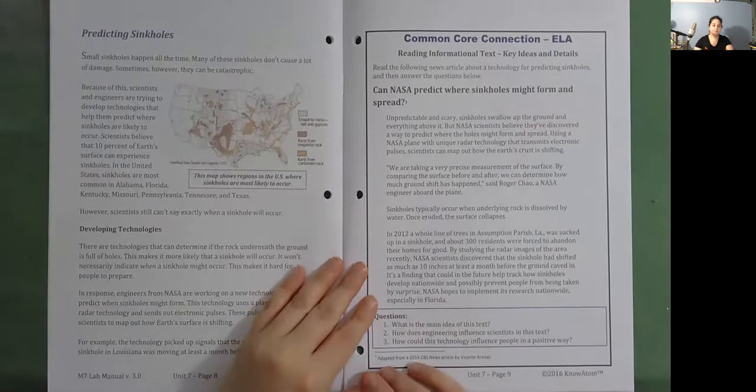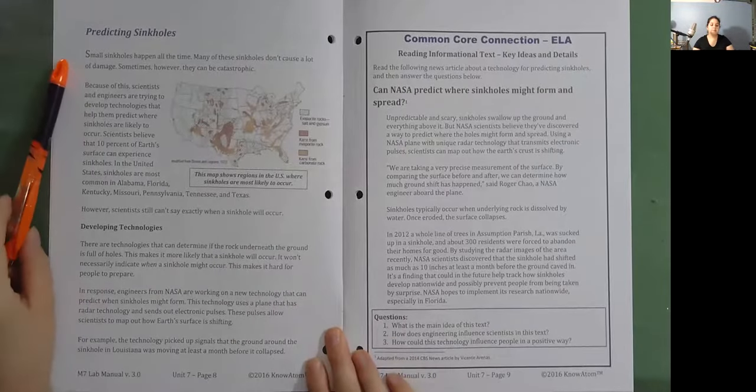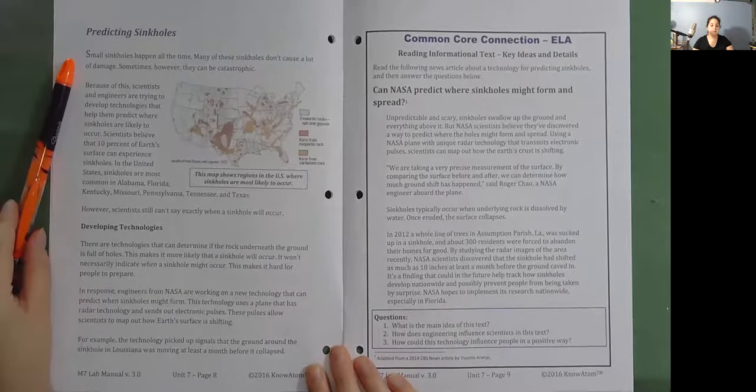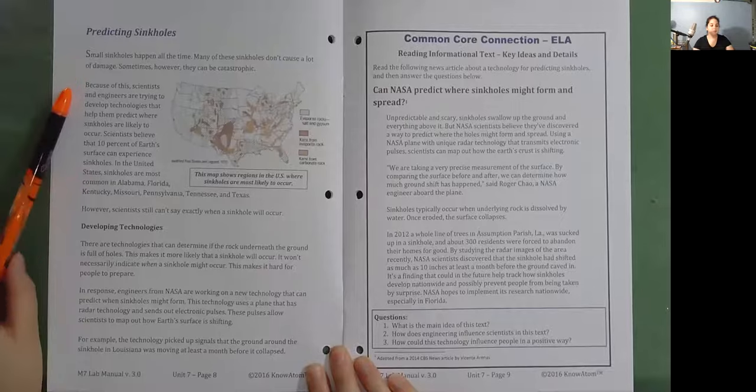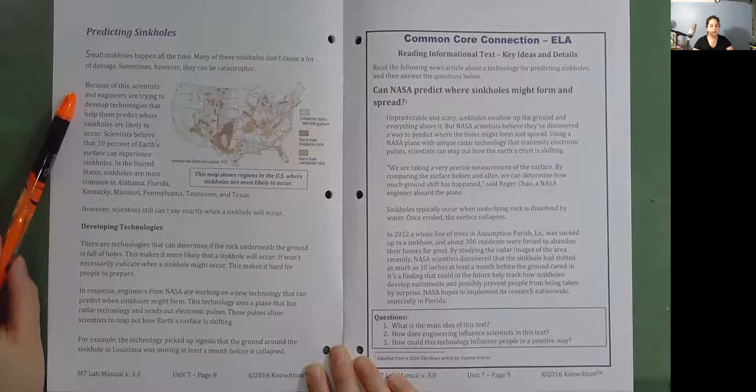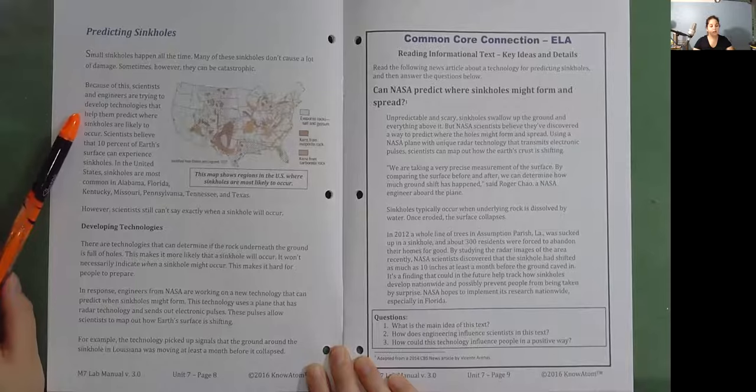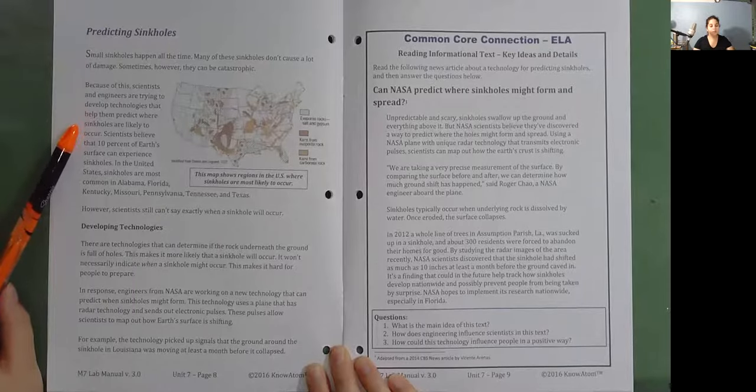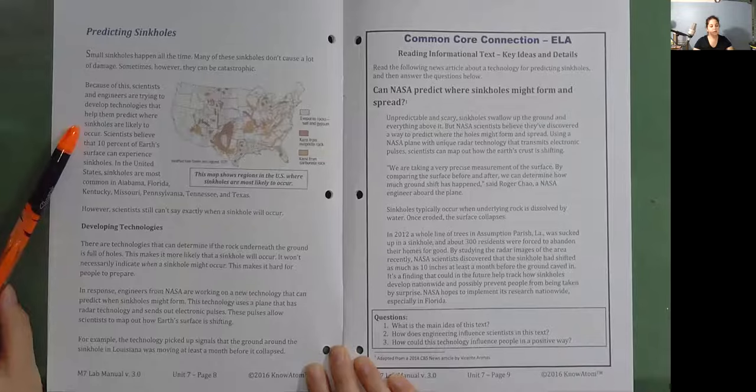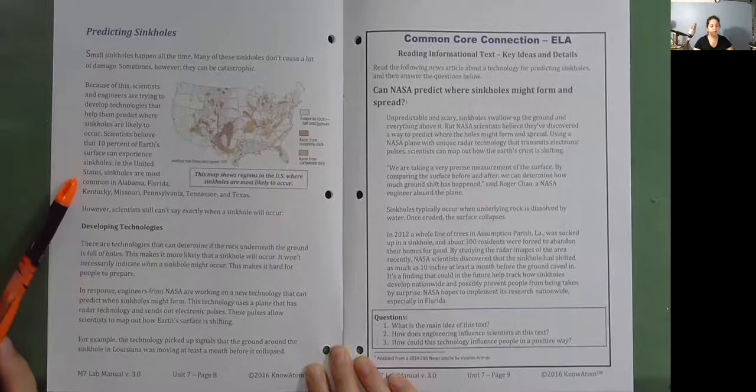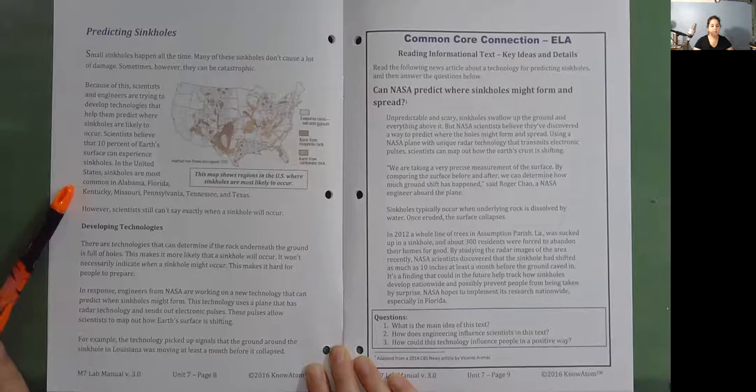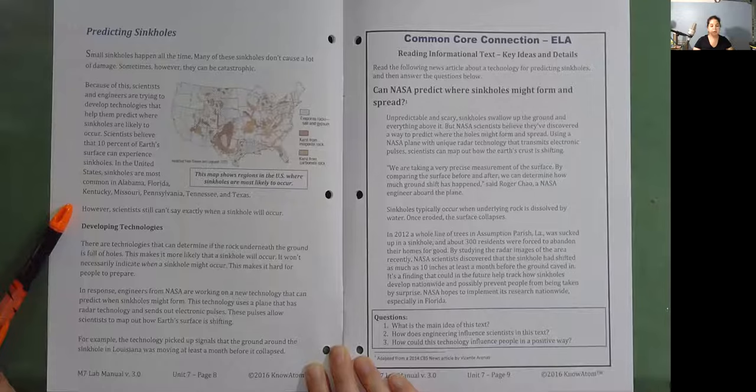Predicting sinkholes. Small sinkholes happen all of the time. Many of these sinkholes don't cause a lot of damage. Sometimes, however, they can be catastrophic. Because of this, scientists and engineers are trying to develop technologies that help them predict where sinkholes are likely to occur. Scientists believe that 10% of Earth's surface can experience sinkholes. In the United States, sinkholes are most common in Alabama, Florida, Kentucky, Missouri, Pennsylvania, Tennessee, and Texas. However, scientists still can't say exactly when a sinkhole will occur.